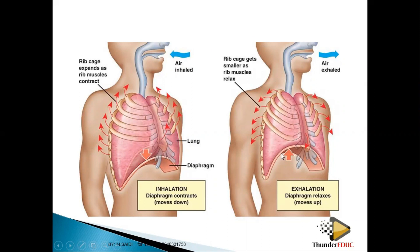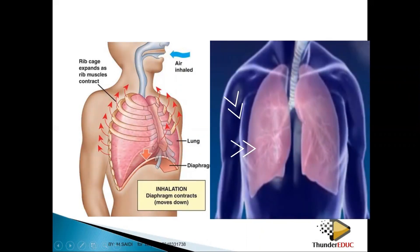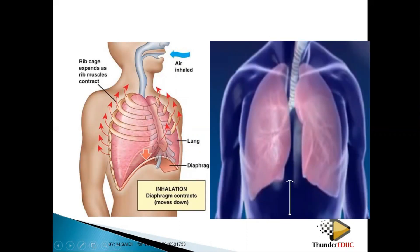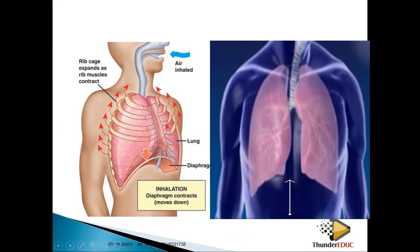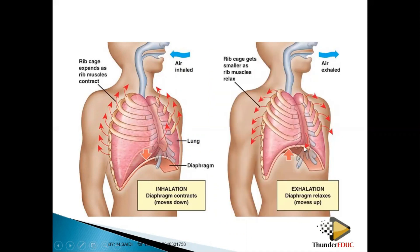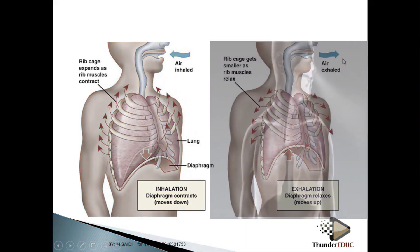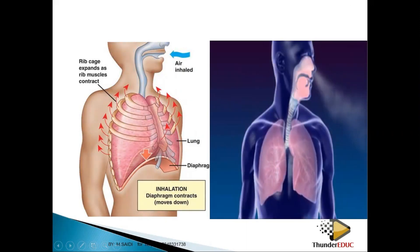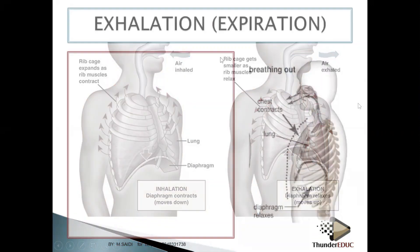During exhalation, the muscles and rib cage move inward and downward. The diaphragm bends inward, making the space inside smaller. Pressure inside the lungs becomes greater than the atmospheric air pressure, and the air is pushed out of the lungs.